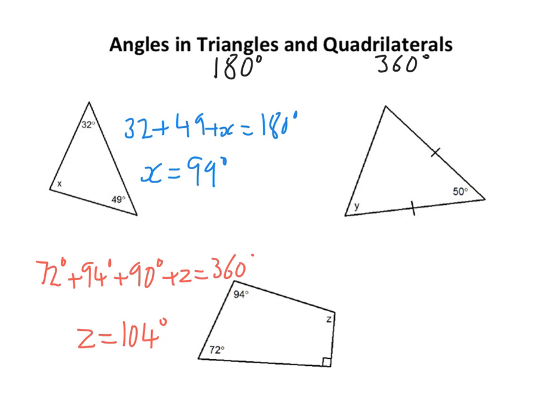Now you might initially look at this one and think, well I can't do that because I've only got one angle, but these little dashes here are the key. That means that this angle and this angle are the same because it's an isosceles triangle.